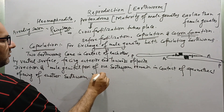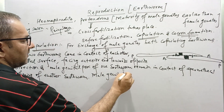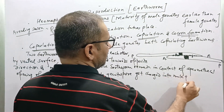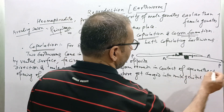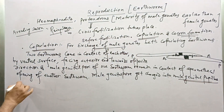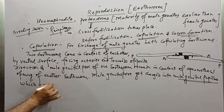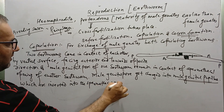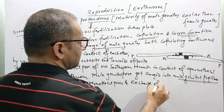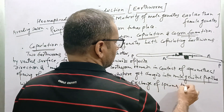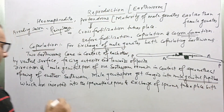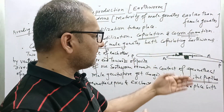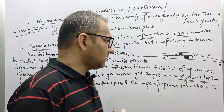Male genital pores get changed into male genital papilla, which are inserted into the spermathecal pores, and exchange of sperm takes place between earthworms. They slightly change their position so that the male genital papilla can be inserted into all spermathecal openings and all spermatheca can receive the sperm.